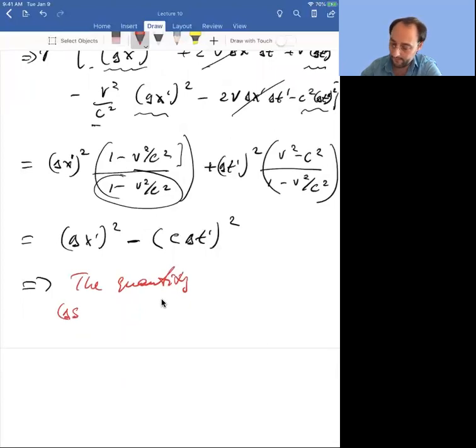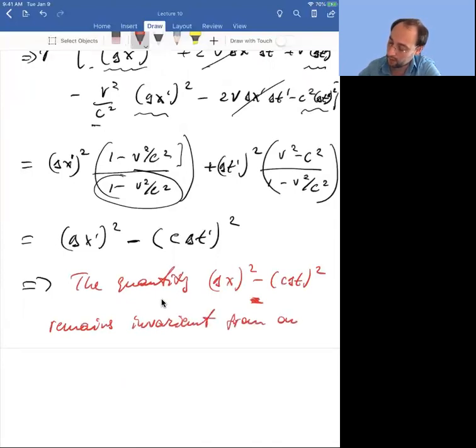It's called delta s squared. The quantity delta x squared minus c delta t squared with a minus sign remains invariant. The square of the interval of space squared minus the interval of c times time squared is called the space-time interval.